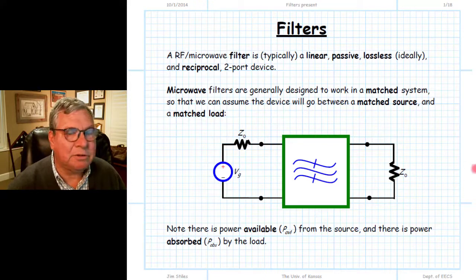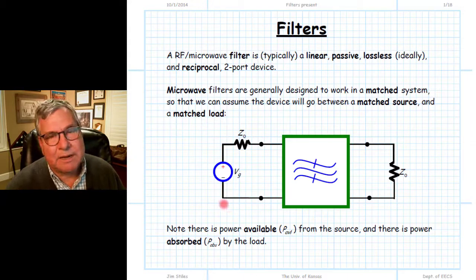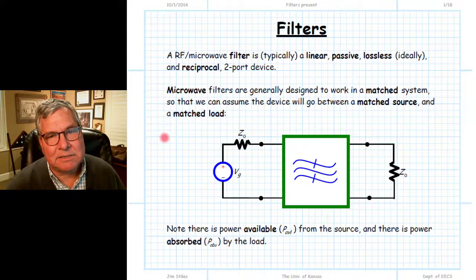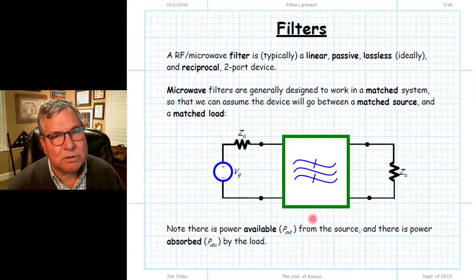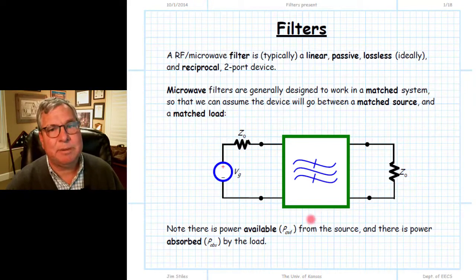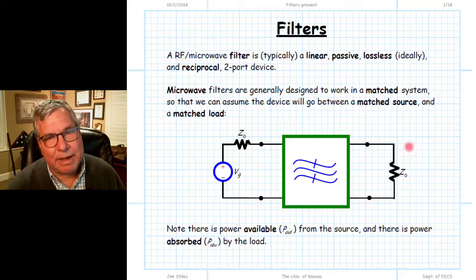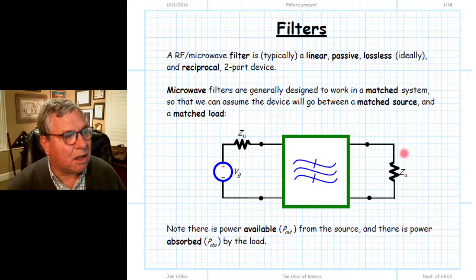The matched load is generally the input impedance of some other set of matched devices. At the input, our source is a matched source, equivalent to some other set of matched devices connected together that are supplying energy. The question is: how does this microwave filter behave in a matched system? It's designed and specified for a matched system. If we connect our filter to anything other than a matched source and a matched load, we will get different behavior than what our specs call for.